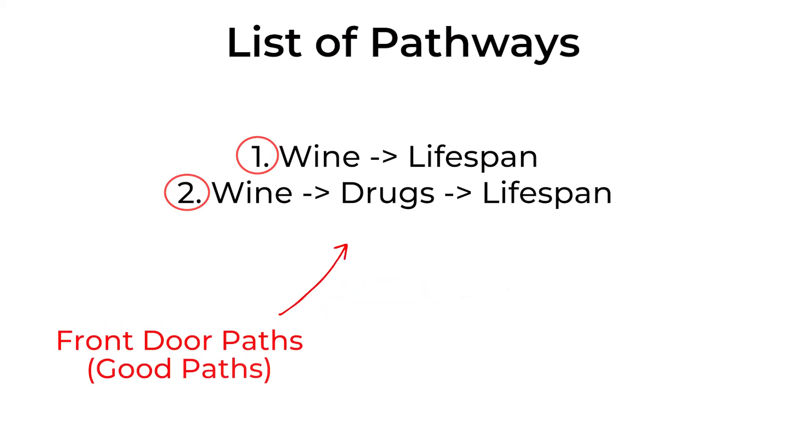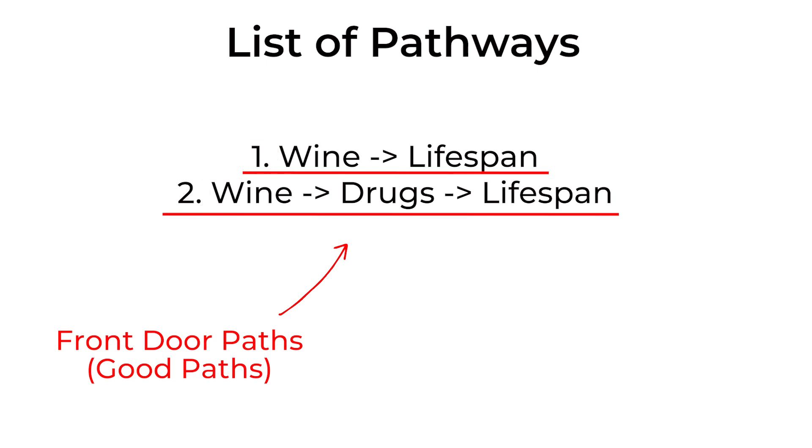Controlling for income and health leaves us with only two pathways: our front door paths — wine to lifespan and wine to drugs to lifespan. Importantly, we should NOT control for drugs. It might feel like we should control for everything related to the outcome, but that's wrong. Controlling for drugs would shut down a front door path — it would remove part of the real effect we want to count. If wine affects lifespan through affecting drug use, that counts as part of our research question.